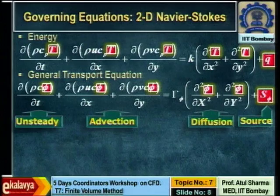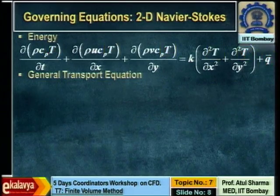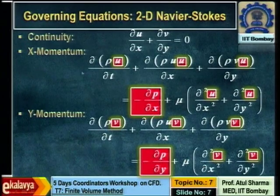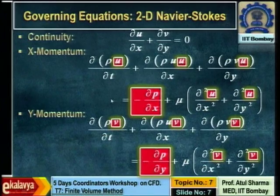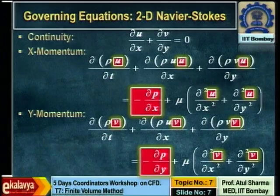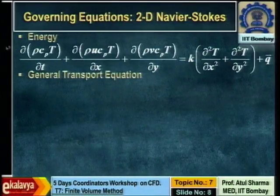How many unknown variables do you have? U velocity, V velocity, pressure, and temperature. Which equation is for U velocity? The x-momentum equation — because it has a term representing the temporal change of x-momentum, so using time-marching you can create a movie of U velocity. Similarly, y-momentum gives temporal evolution of V velocity, and the energy equation gives you temperature. So: x-momentum for U, y-momentum for V, and energy for T.